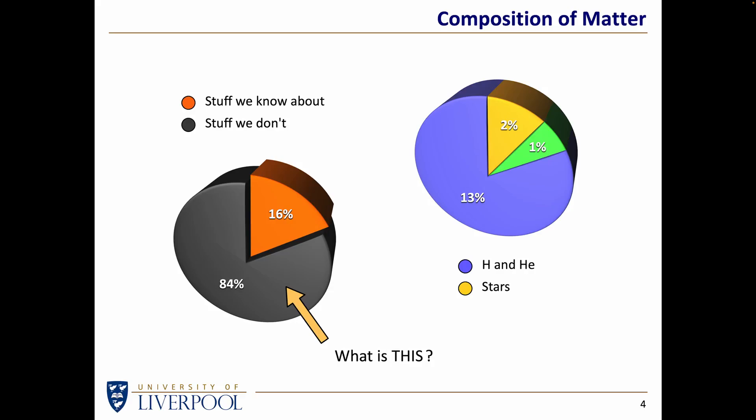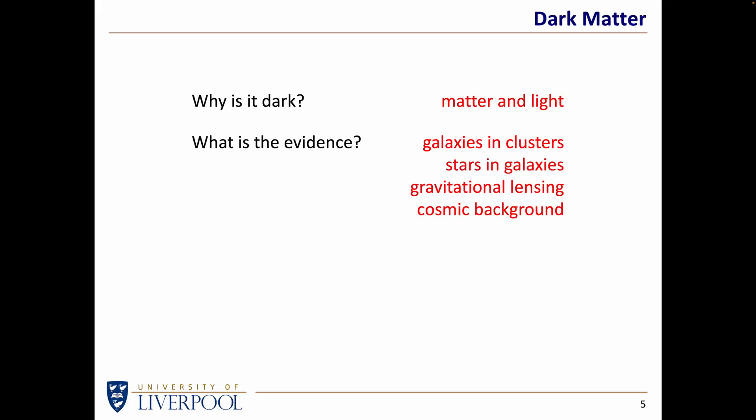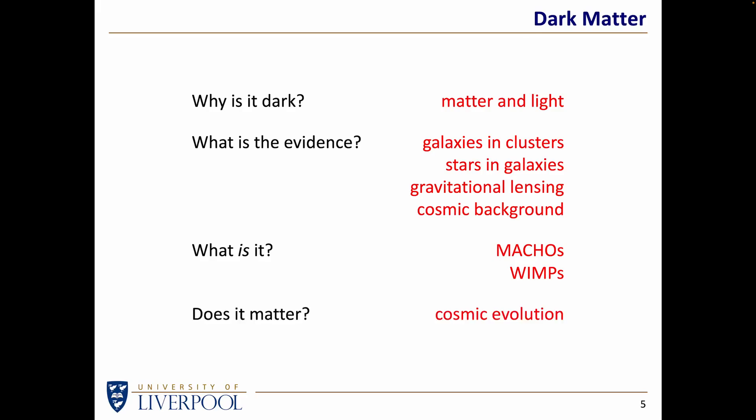This is dark matter. I'm going to say a little bit about why it's dark, what evidence there is that dark matter exists — at least four strands, though I'll cover three of them, with the fourth available in a handout. We can ask: what is it, if it exists? There are a couple of possible candidates. And I'll finish with: does it actually matter? What if dark matter didn't exist — would it make any material difference to the way the universe operates?